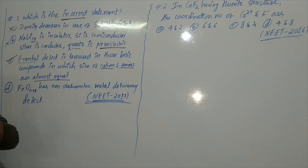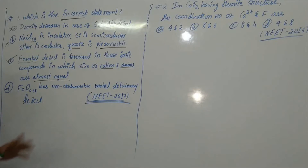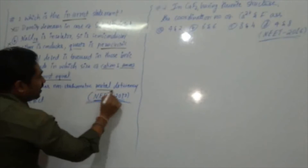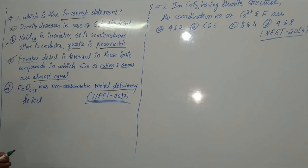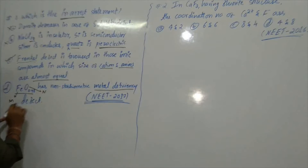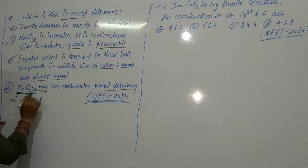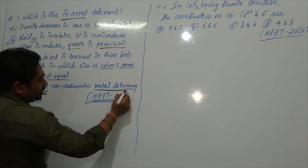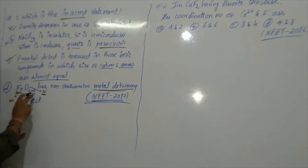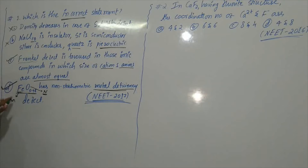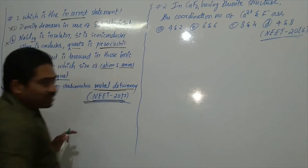We'll check option D also, because in NEET exams sometimes more than one answer can be correct. Option D: FeO₀.₉₈ has a non-stoichiometric metal deficiency defect. In this compound, iron is the metal. For one iron, there is only 0.98 — the lesser amount is the non-metal, not the metal. The metal is not deficient, so this is also a wrong statement. The answer is both C and D.